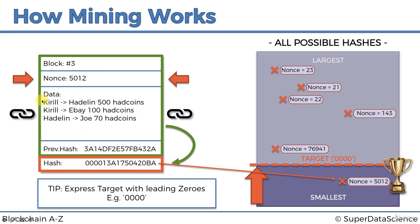Once the golden nonce is found, the miner is allowed to add the block to the blockchain and receives the reward — which we'll discuss in module two. The rest of the time, miners are just iterating the nonce — these are rigs of nodes just churning away, changing the nonce over and over, hoping to guess the right hash. Whoever gets there first adds the block, and then the whole thing starts again for the next block.